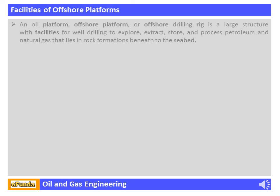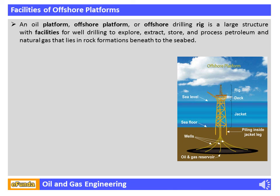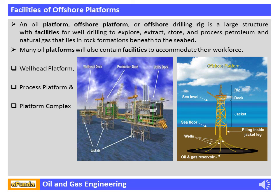Facilities of Offshore Platforms: An oil platform, offshore platform, or offshore drilling rig is a large structure with facilities for well drilling to explore, extract, store, and process petroleum and natural gas that lies in rock formations beneath the seabed. Many oil platforms also contain facilities to accommodate their workforce. Types of platforms include wellhead platform, process platform, and platform complex.